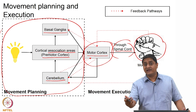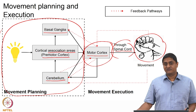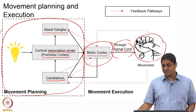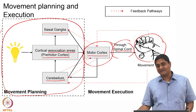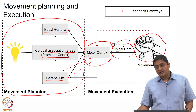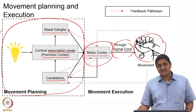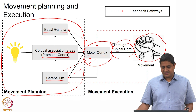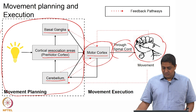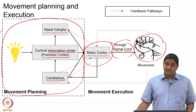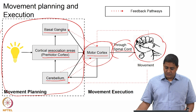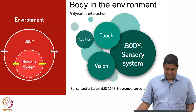Whenever there is an error in a movement — say you have to make a particular movement and there is an error — it could be because of planning mistakes or because of execution mistakes. So errors may arise due to either of those two reasons.